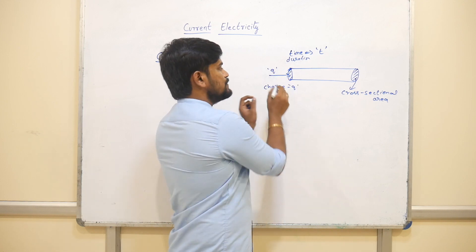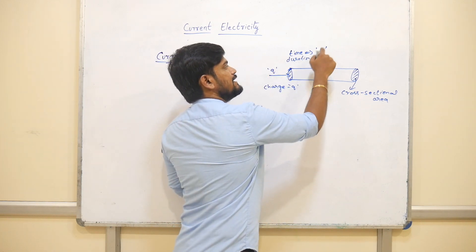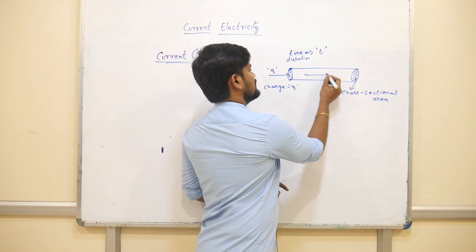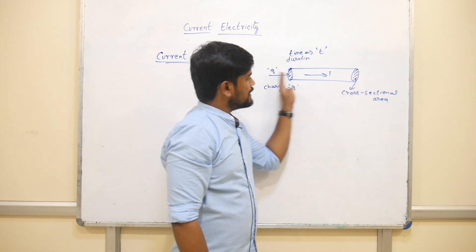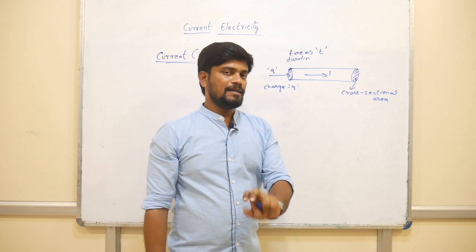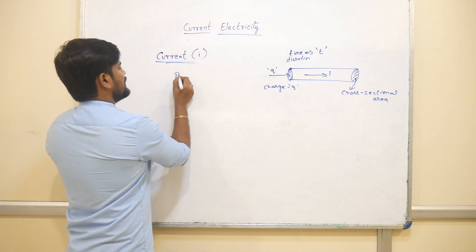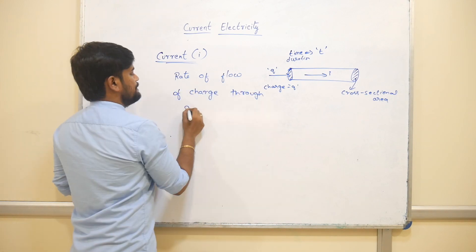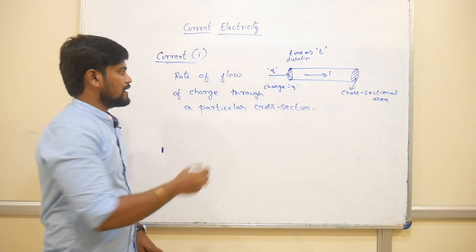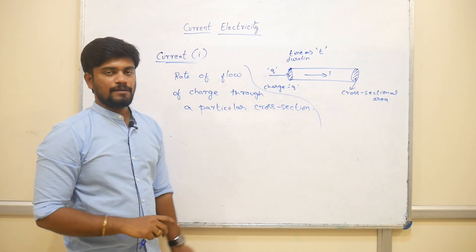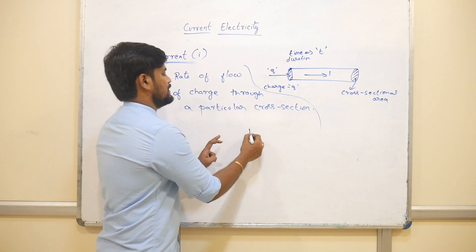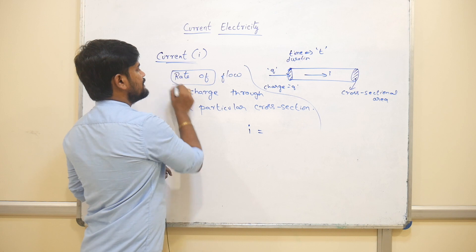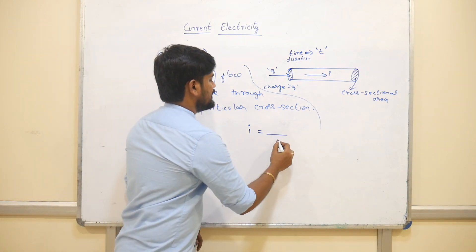Q is charge and T is time. Current is the rate of flow of charge through a particular cross-section. So the current is defined as the rate — and in physics, rate means divided by time.